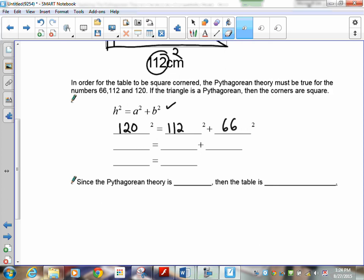Now, it's not too difficult. Just take your calculator and do what we were doing before. 120 squared is 14,400. 112 squared is 12,544. And the next one is 4,356.